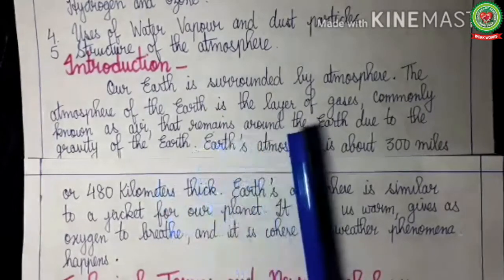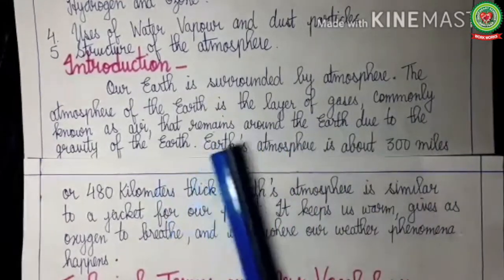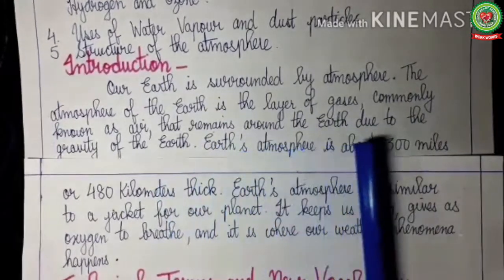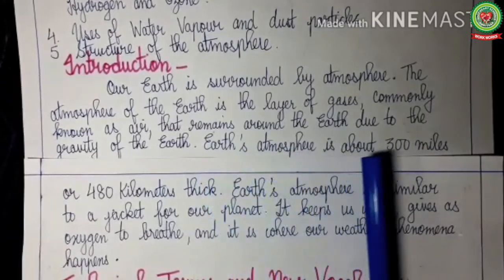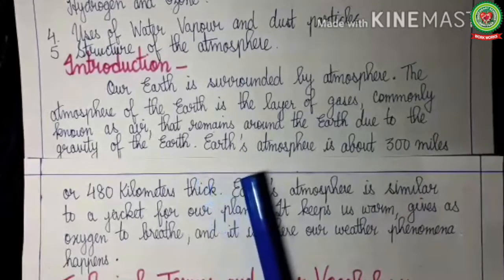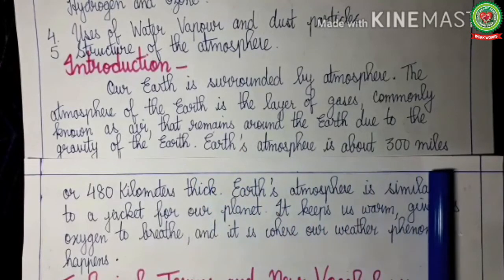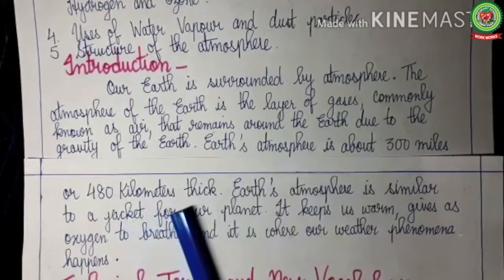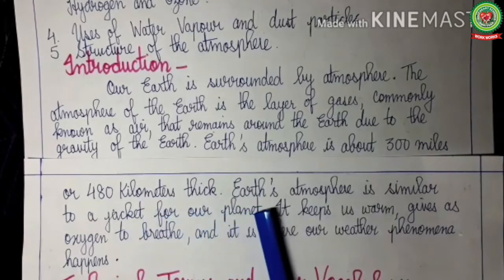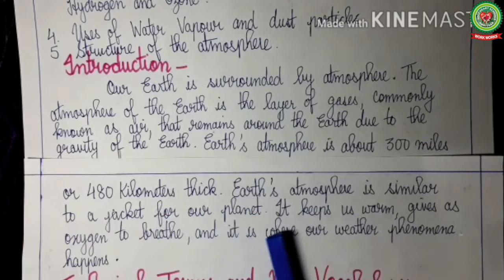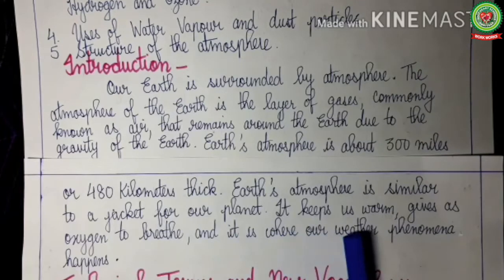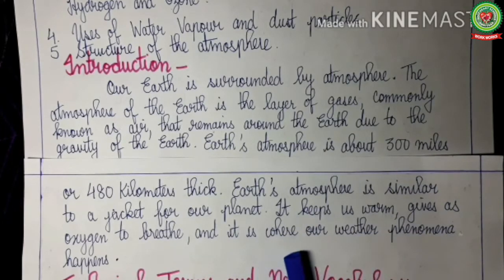Our earth is surrounded by atmosphere. The atmosphere of the earth is the layer of gases, commonly known as air, that remains around the earth due to the gravity of the earth. Earth's atmosphere is about 300 miles or about 480 kilometers thick. It is similar to a jacket for our planet — it keeps us warm, gives us oxygen to breathe, and is where all weather phenomena take place.